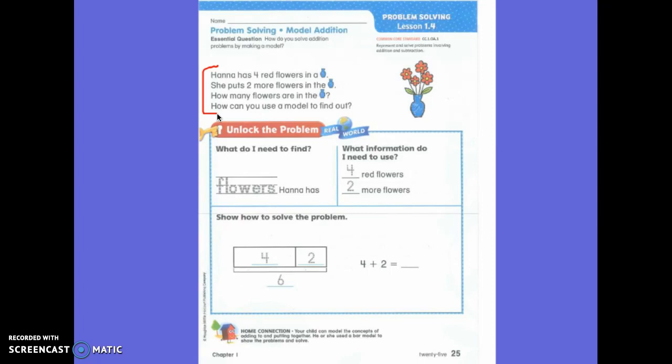Let's read together. Hannah has four red flowers in a vase. She puts two more red flowers in the vase. How many flowers are in the vase? How can you use a model to find out?